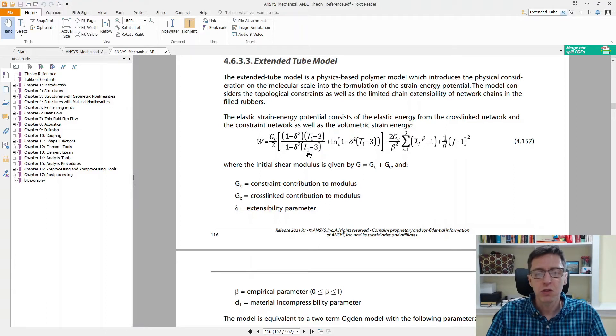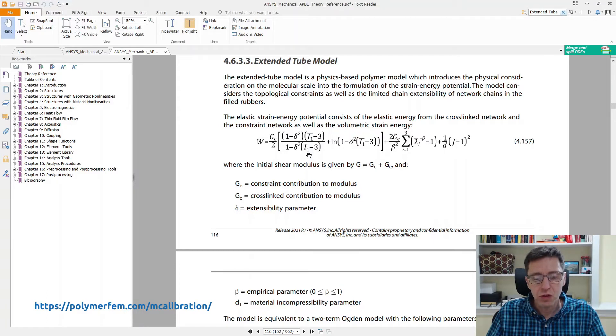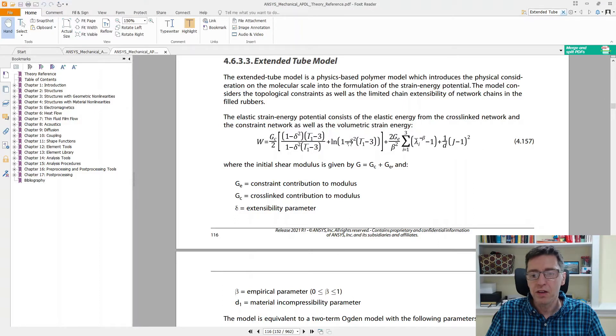I will demonstrate that here today using a parametric study in the mCalibration software. But there are a few things to look at first. GC and GE typically should be positive. These are energies after all, and the delta parameter is only available as delta squared in this equation. So there is no need for trying a negative delta value, so we might as well limit our attention to delta equal to zero or positive. ANSYS says beta should be between zero and one, but if you look at this particular equation, this is actually an Ogden type hyperelastic energy function, and in the Ogden model there is no limitation that the beta parameter needs to be positive. That's something we can explore.